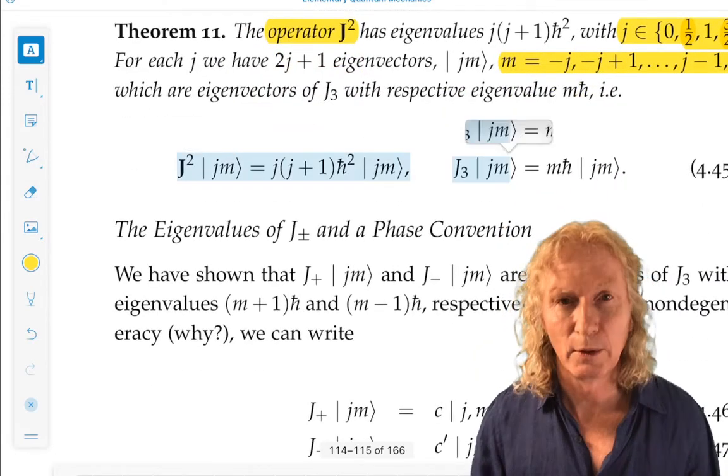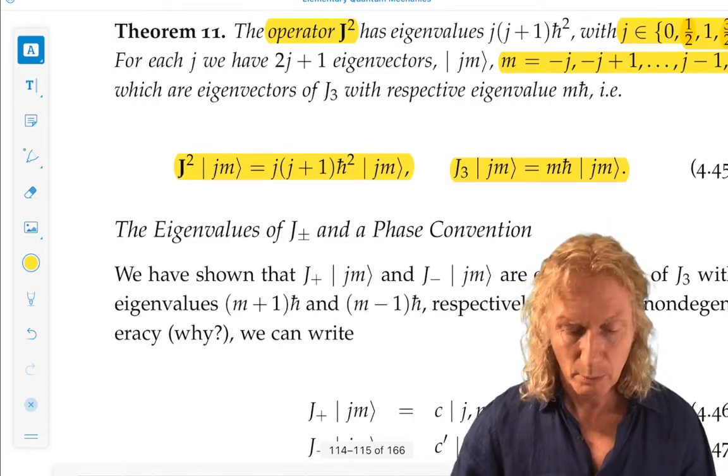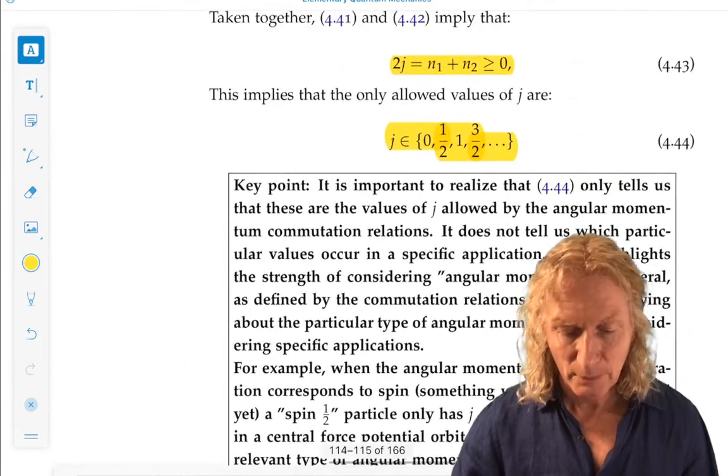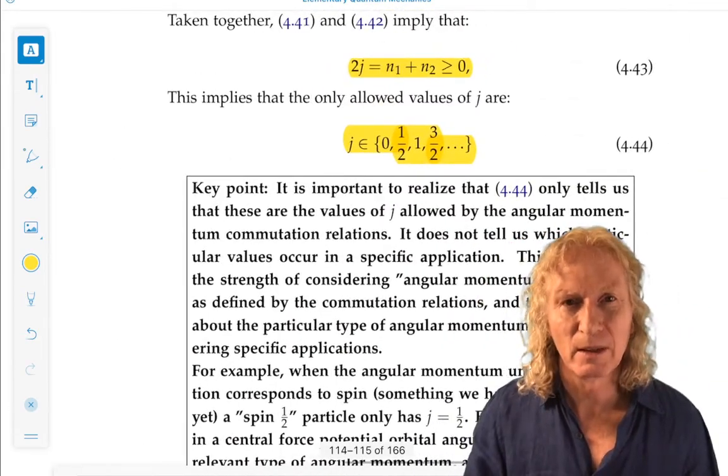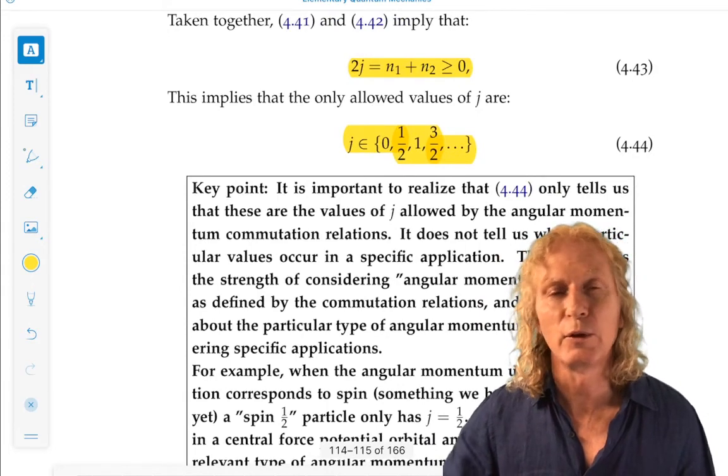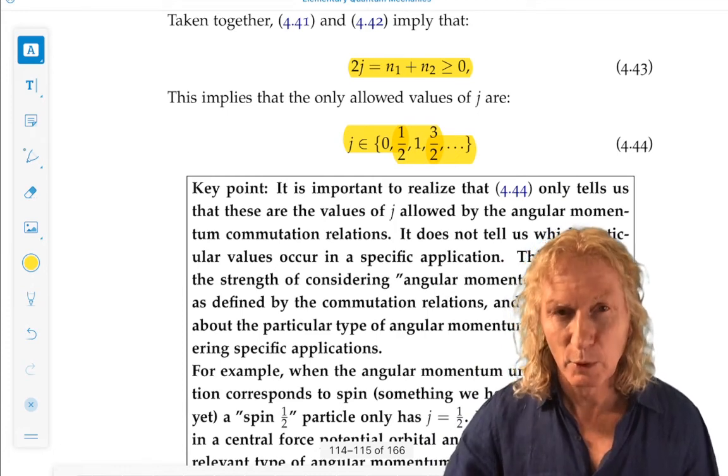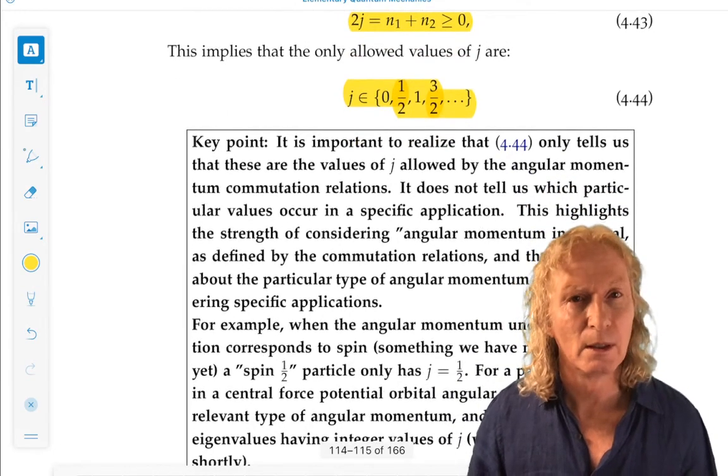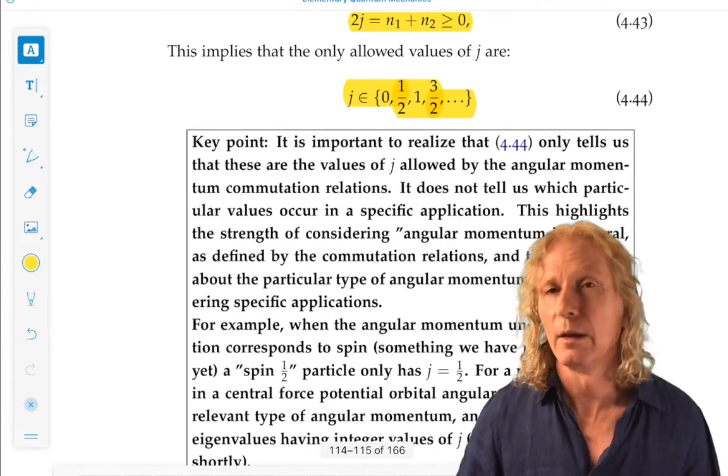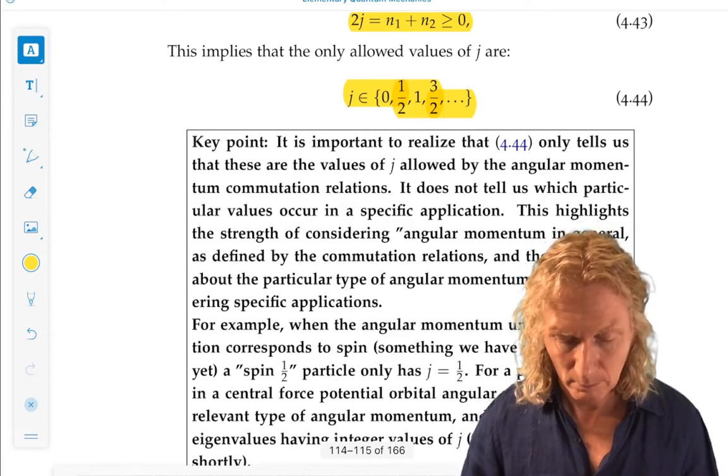This is the characterization we have. The part in black bold is important. For a given application, it doesn't tell us all these J's have to occur. It just tells us the possible J's that can occur. And it's up to us to look at the particular application and see what values of total angular momentum. That will fix the values of M that are allowed.